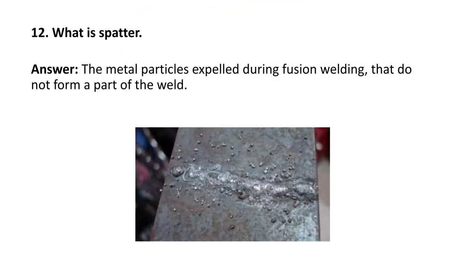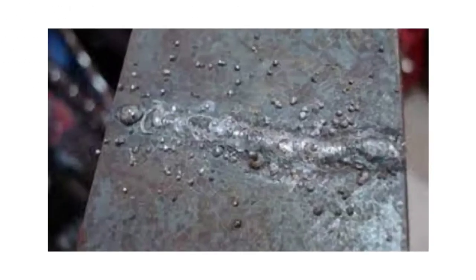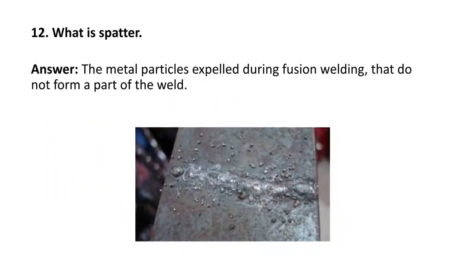Next question: what is spatter? Spatter refers to the metal particles expelled during fusion welding that do not form a part of the weld. Here you can see the spatter — those small points visible around the weld area. Metal particles expelled during fusion welding which are not part of the weld are known as spatter.